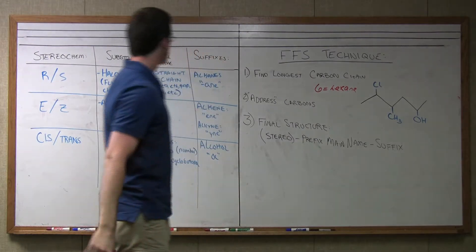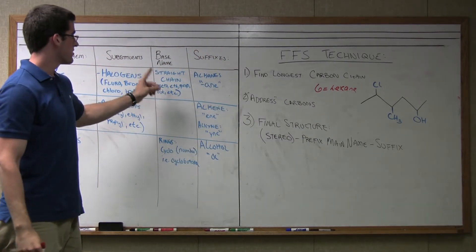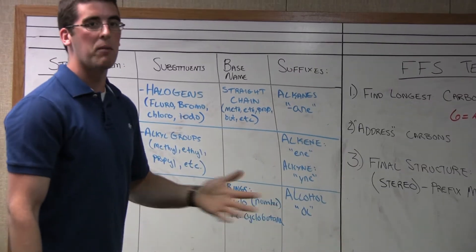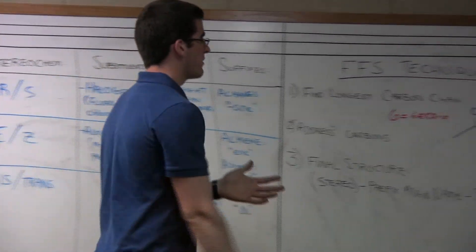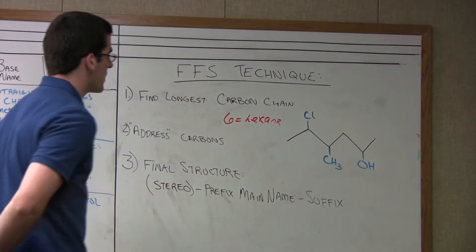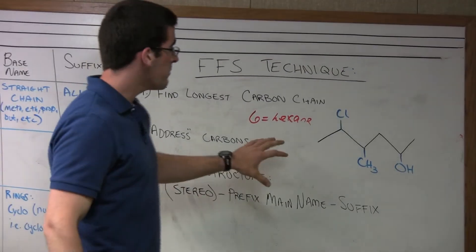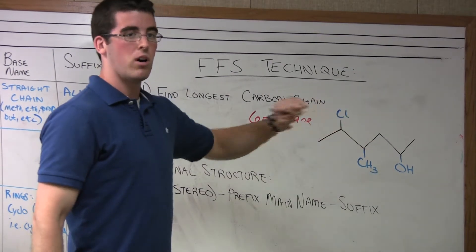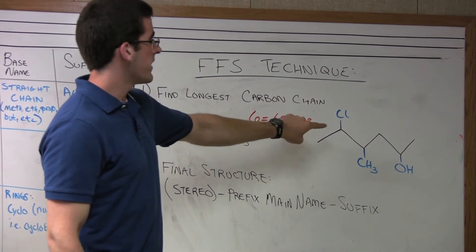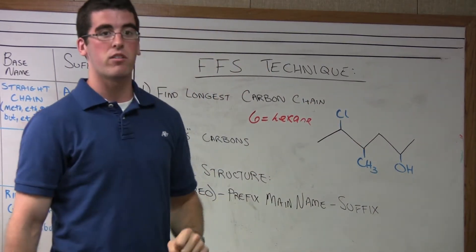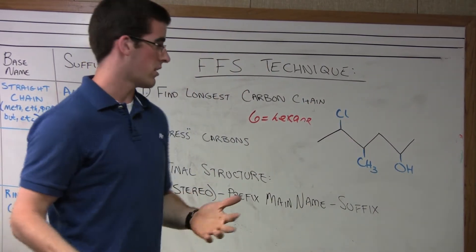Now it's also referenced in the chart here, base name. We're looking at straight chains by the way. So meth, eth, prop, but, et cetera, onward, different names for how many carbons are in the chain there. So now that we've established the main carbon chain here, we're going to address the carbons. And this means that we're going to number this base chain through numbering the system and giving these substituents, the Cl, the methyl, the alcohol, addresses, which means they're just going to have numbers on the carbon.